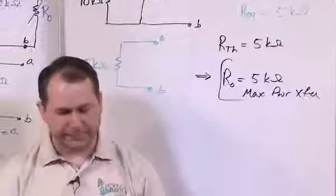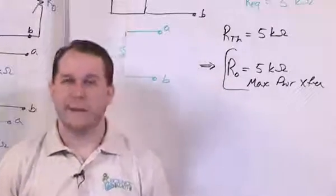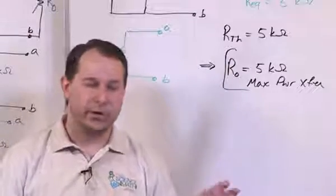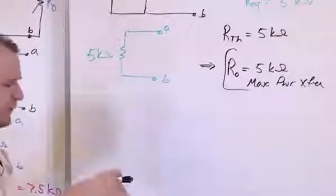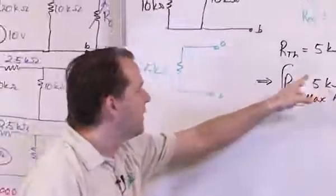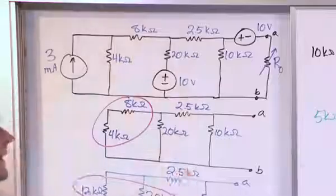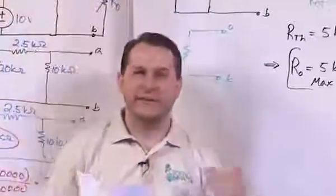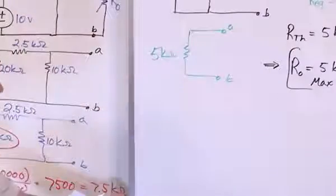For the second part of the question: how many watts are delivered to the load at maximum power transfer? We take the 5 kiloohm load resistance we've determined, substitute it back into the circuit, and resolve the circuit to find how many amps are flowing through it. Then I squared R gives us the power absorbed by — equivalently, delivered to — that load resistor.